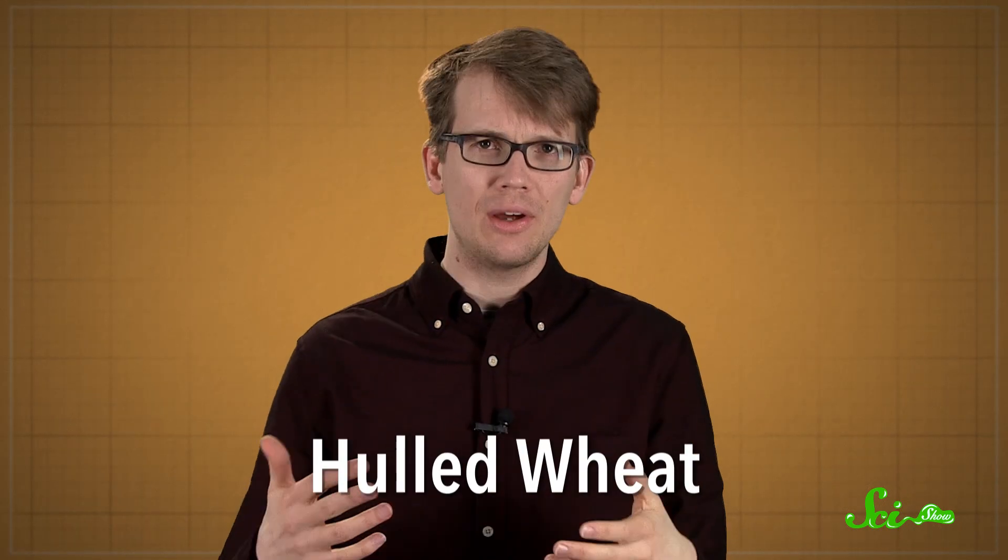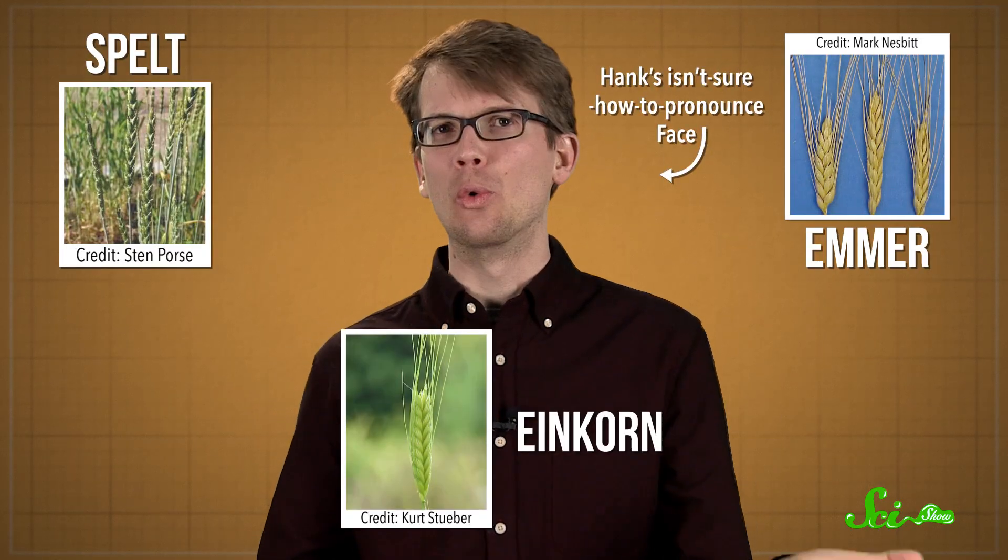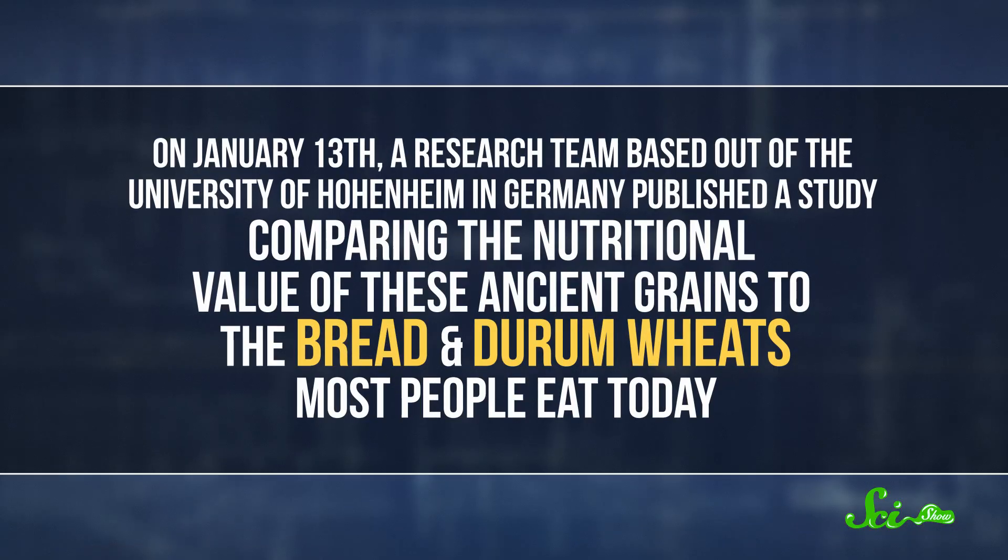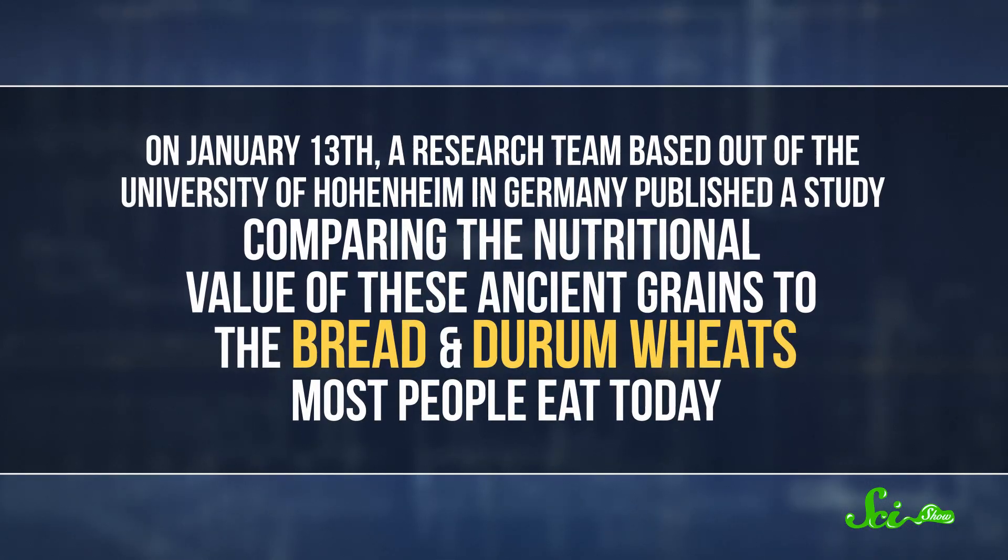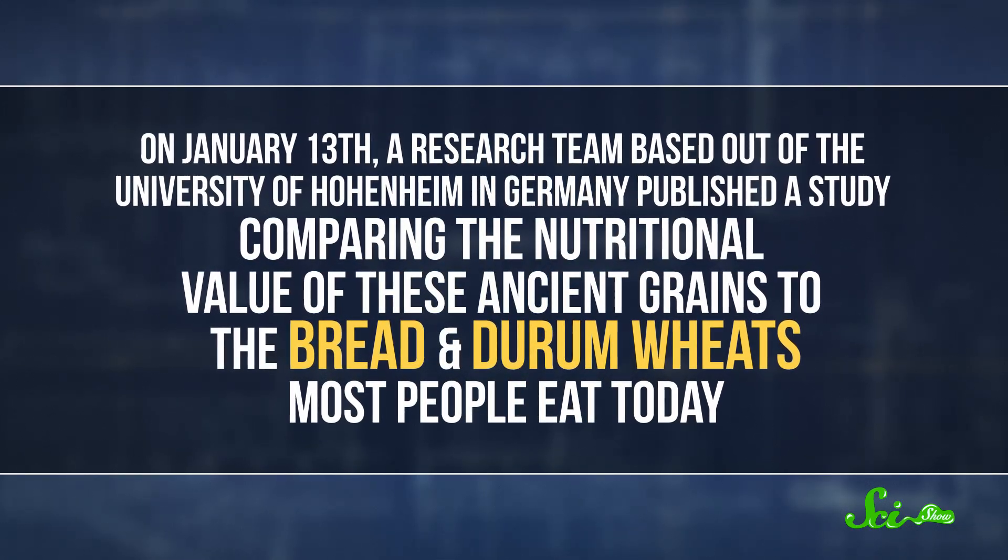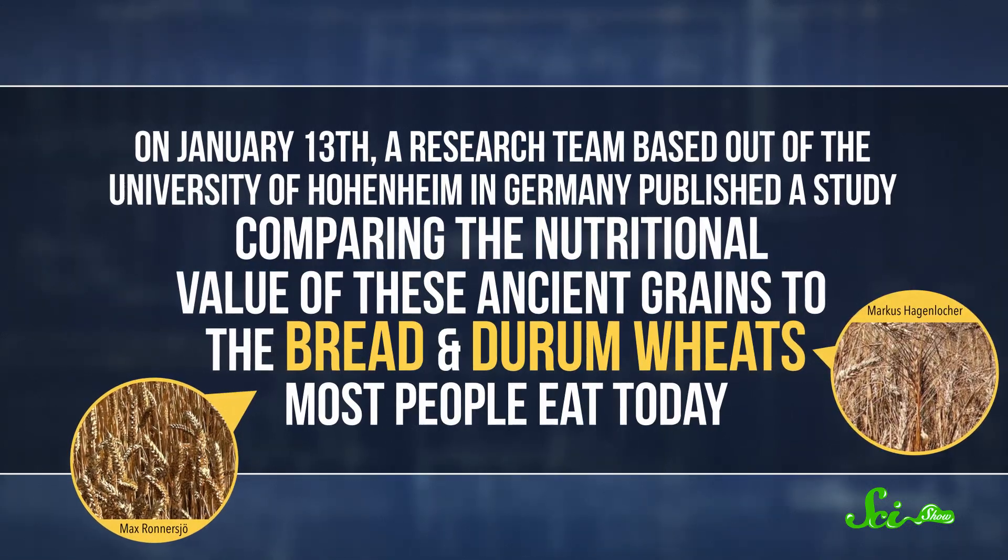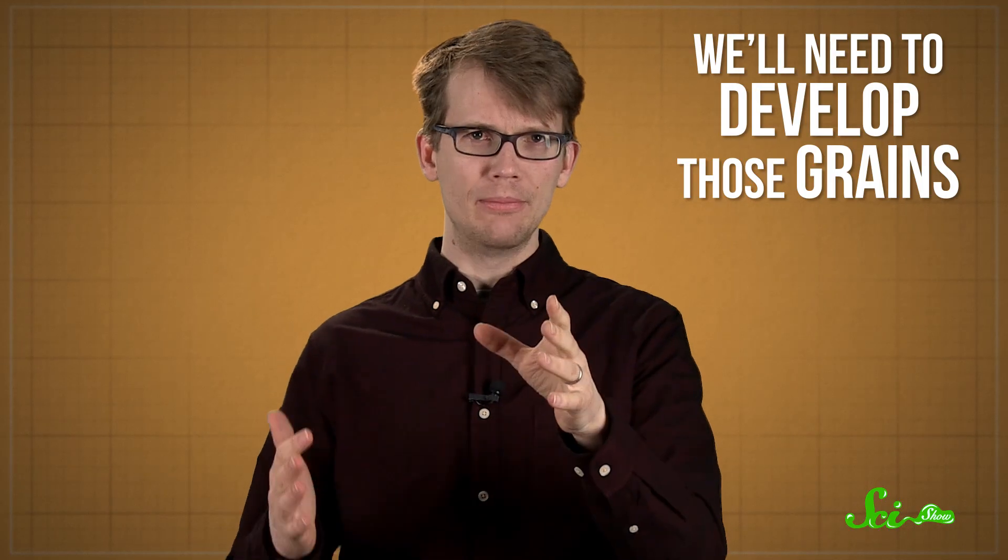Specifically, people are interested in hulled wheat, which is similar to the kinds of wheat that were grown in ancient times like spelt, emmer, and einkorn. Which is why, on January 13th, a research team based out of the University of Hohenheim in Germany published a study comparing the nutritional value of these ancient grains to the bread and durum wheats that most people eat today. And it turns out that if we want to start producing more of those older kinds of wheat, we'll probably need to develop them a bit.